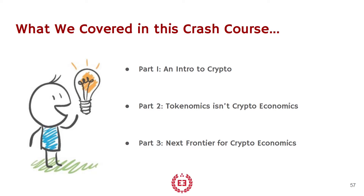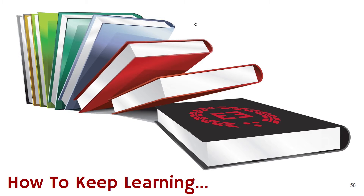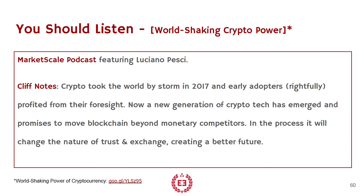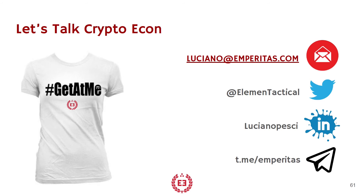Let's wrap up everything we've covered in this crash course. Part 1 was a broad intro to crypto — its technology, its social impact. Part 2 talked about the different components of a token and the emergence of tokenomics. And Part 3 moved beyond tokenomics into crypto economics and explained the different methods from economics that can be used to better guide these little crypto economies. To keep learning, I recommend you read the article I wrote on LinkedIn about why crypto will kill cash, and listen to the podcast I was recently featured on about why crypto is changing the world. Get a hold of me if you want to continue talking crypto — if you want a version of these slides, send me an email. You can reach me on Twitter, LinkedIn, or Telegram. Thank you for joining us in this crypto crash course. If you have feedback, please send that to us too — we'd love to know what you thought so we can continue to improve it.